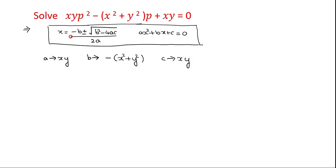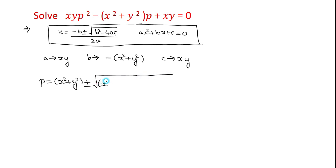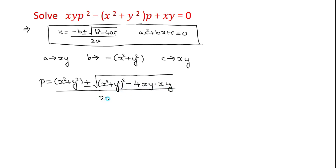Substituting these values in the quadratic root formula, we have P is equal to minus B — and since B already has a minus sign, it becomes plus — so it is X squared plus Y squared, plus or minus root of X squared plus Y squared whole squared minus 4A which is XY and C which is also XY, all divided by 2A, where A is XY.